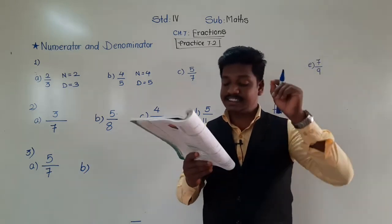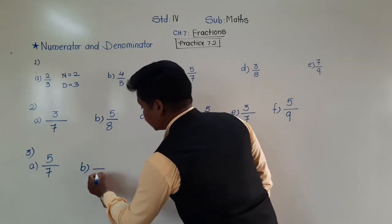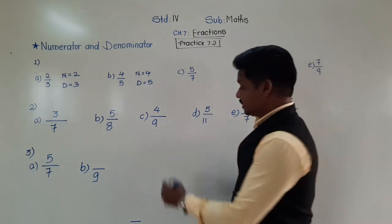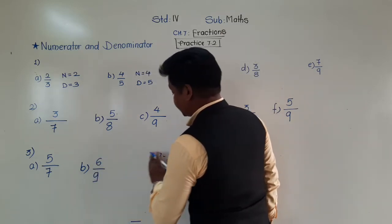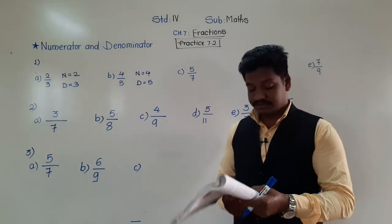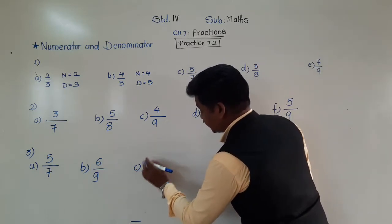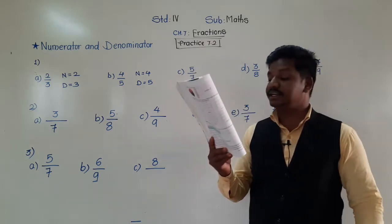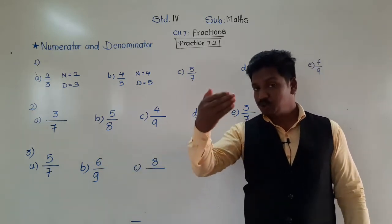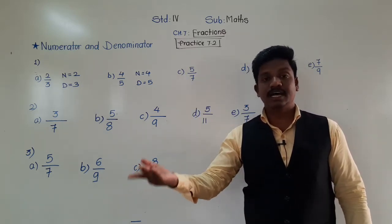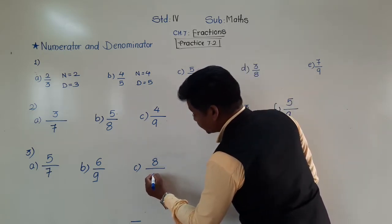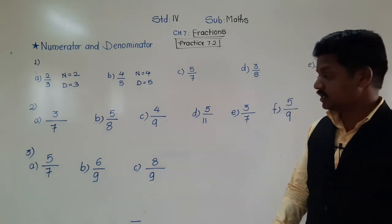C: numerator is 8 and denominator is 1 more than the numerator. Less means minus and more means plus. So denominator is 8 plus 1 equals 9. The fraction is 8 by 9. Pause this video, write the answers in front of each statement, then continue to question 4.